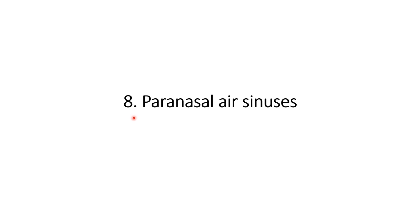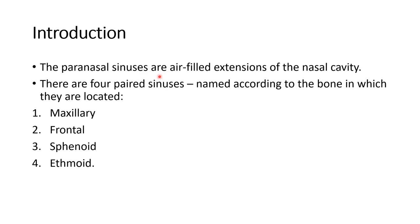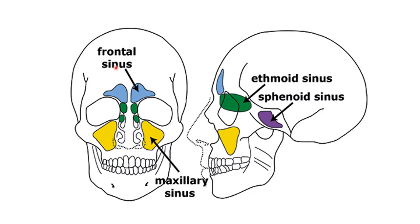The 8th short note was about paranasal air sinuses. Paranasal air sinuses are air-filled extensions of the nasal cavity. There are 4 paired sinuses, named according to the bone in which they are located. The 4 sinuses are maxillary, frontal, sphenoidal, and ethmoidal. You have to draw the picture of sinuses: the frontal sinus, ethmoid sinus, maxillary sinus, and sphenoid sinus.